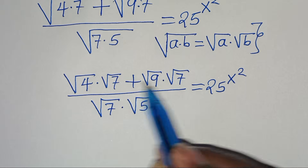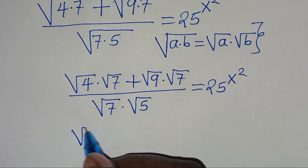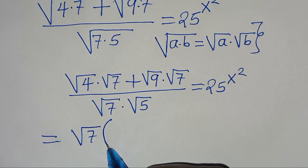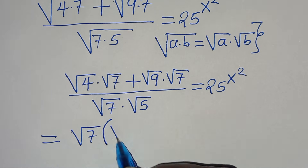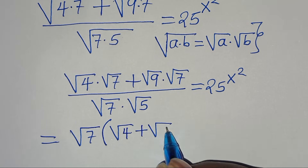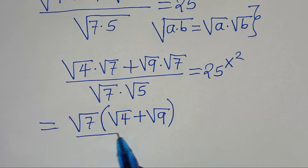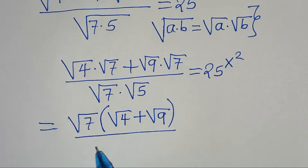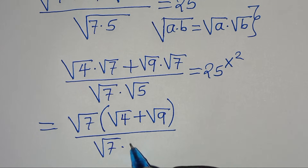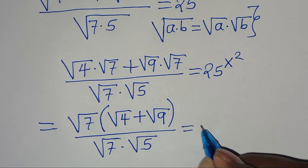Now the square root of 7 is common in the numerator, so we can factor out the square root of 7, so that inside the parenthesis we have the square root of 4 plus the square root of 9. Outside the parenthesis, this is divided by the square root of 7 multiplied by the square root of 5. This is equal to 25.